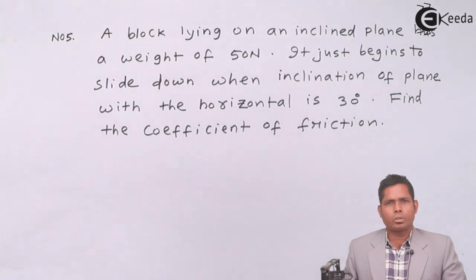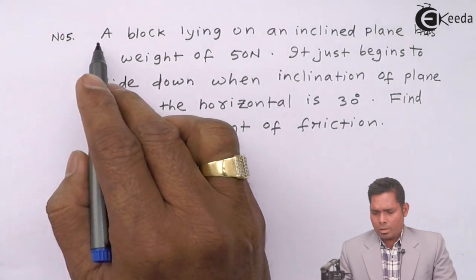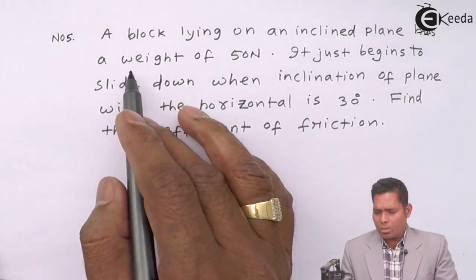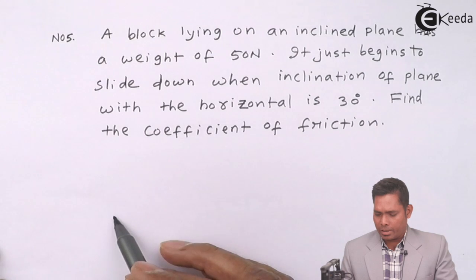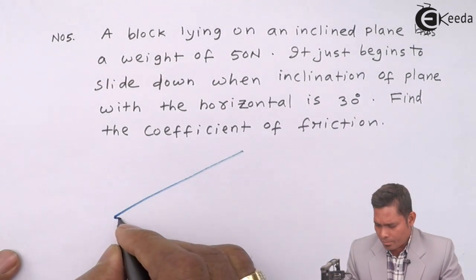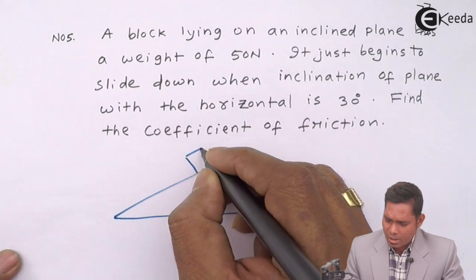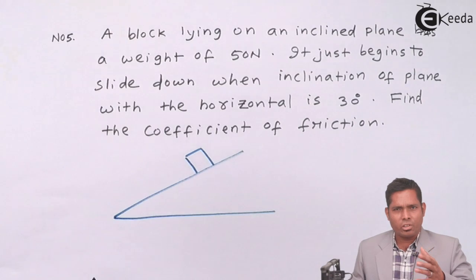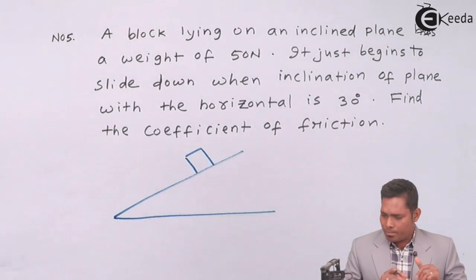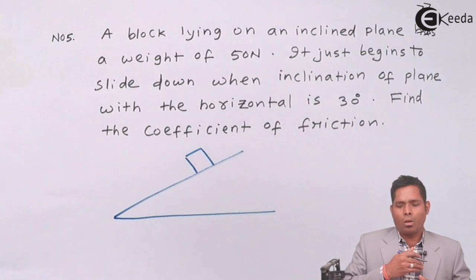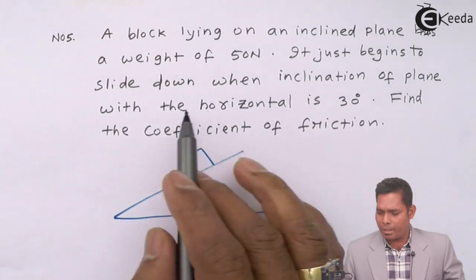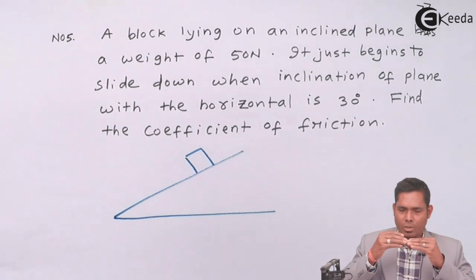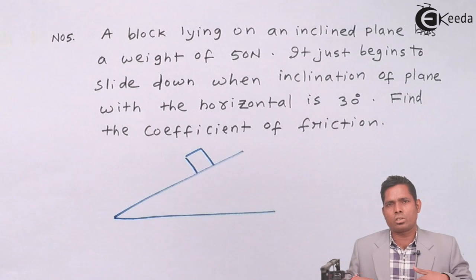Let us solve this question. A block lying on an inclined plane has a weight of 50 Newton. An inclined plane with a block placed on it whose weight is 50 Newton — that means the mass of the block is 5 kilograms. It just begins to slide down when the inclination of the plane with the horizontal is 30 degrees.